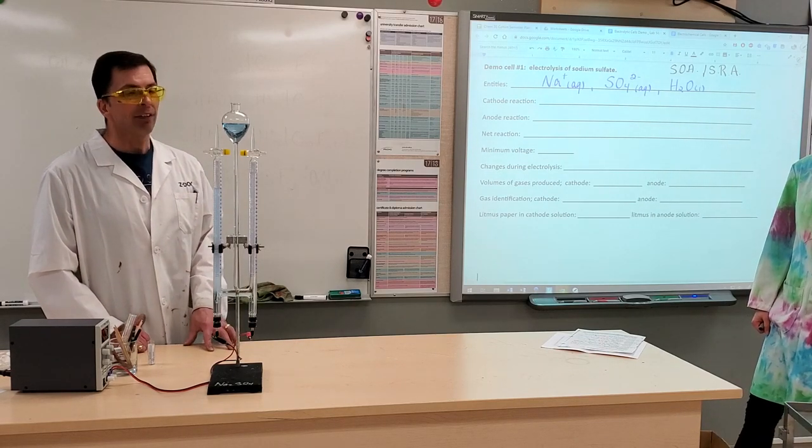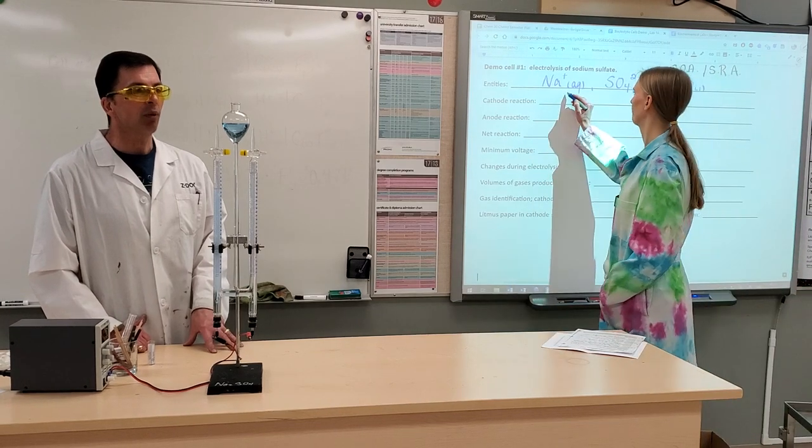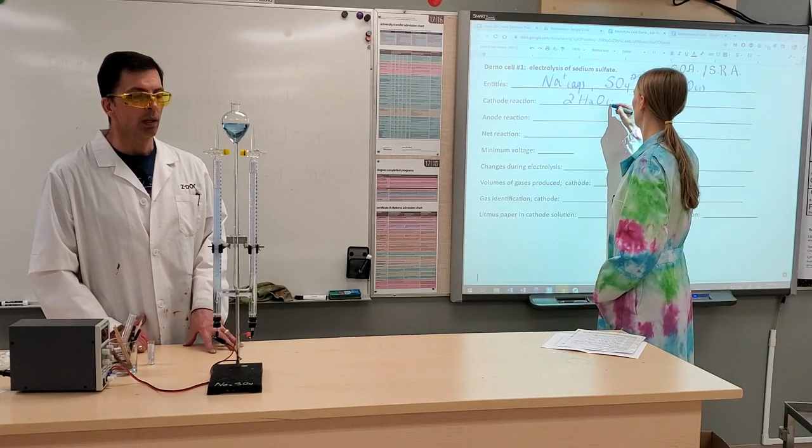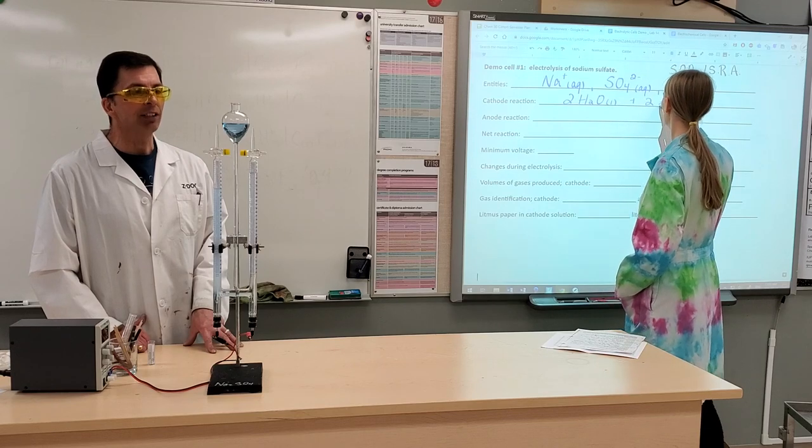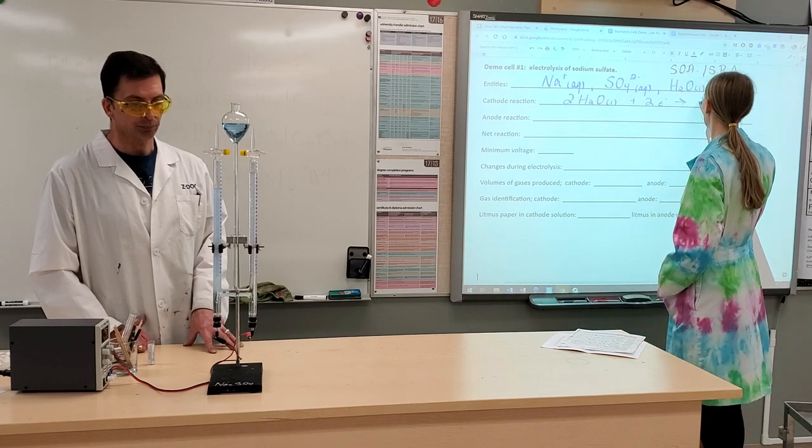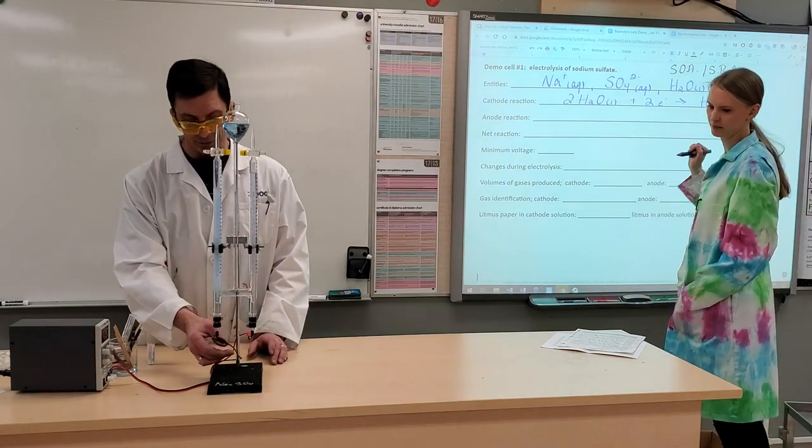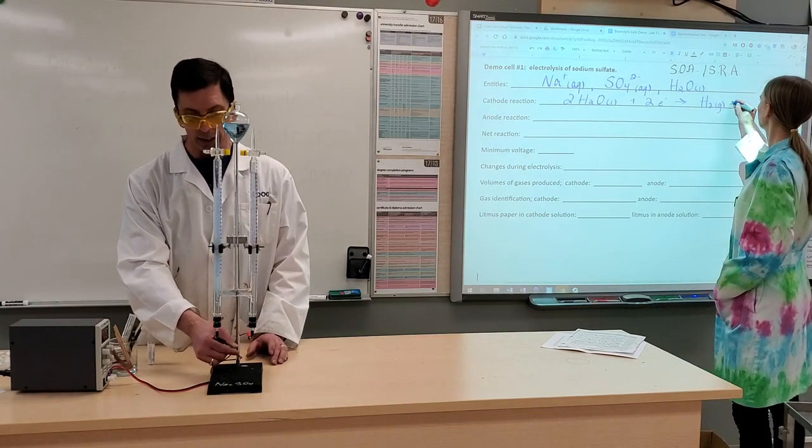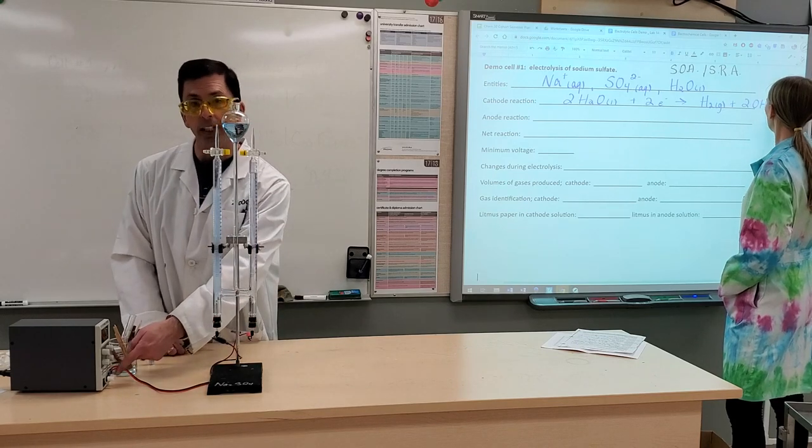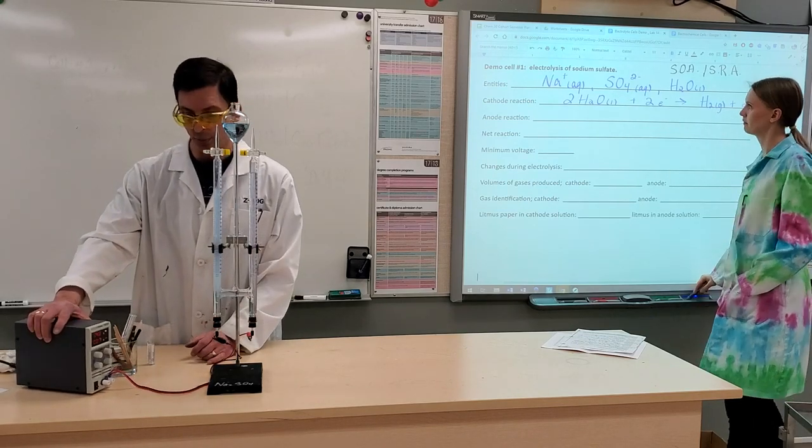So at our cathode, we have the reduction of water. And that's producing hydrogen gas. Remember that the cathode now is labeled negative. And you can see the black wire in the apparatus is connected